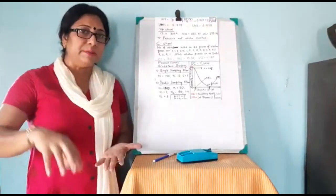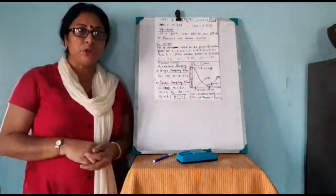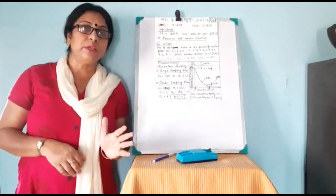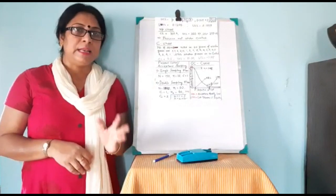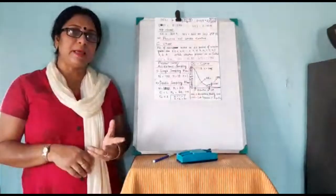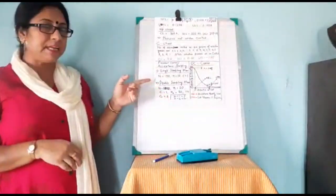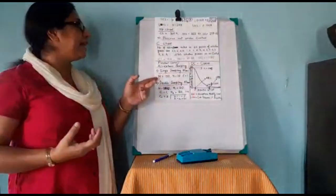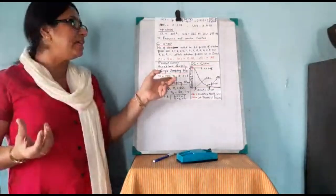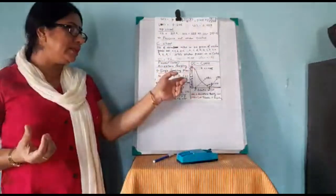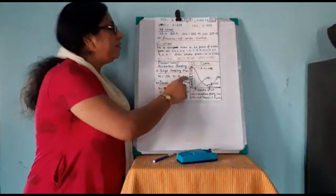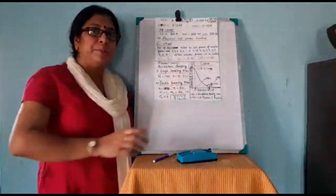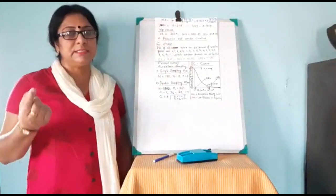There are two sampling plans which are generally followed. One is called single sampling plan and the second is called double sampling plan. Product control is also called acceptance sampling. In the single sampling plan, you will be given N — capital N — that is the lot size or population size. In this case my lot size is 150. Small n, that is the sample size, is 10. And C, the number of defectives allowed, is 1. This C value will be specified — it will vary from company to company and depends on company's policy.